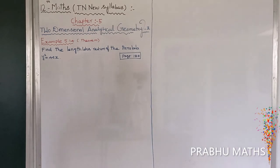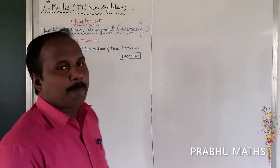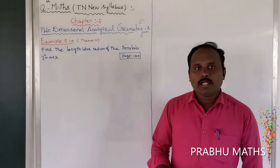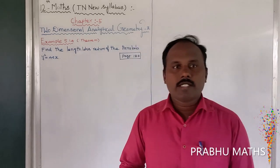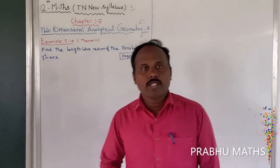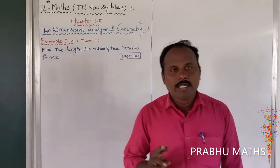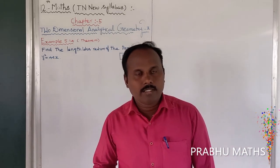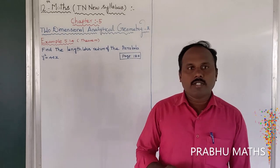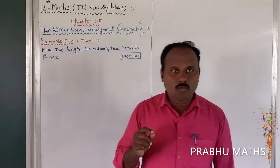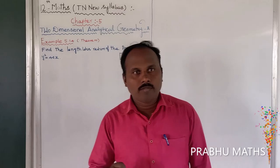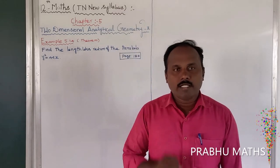Example 5.14: Find the length of the latus rectum of the parabola. The parabola y² = 4ax — you have already studied the four types of parabola. First: y² = 4ax. Second: y² = -4ax. Third: x² = 4ay. Fourth: x² = -4ay. These are rightward open, leftward open, upward open, and downward open respectively.